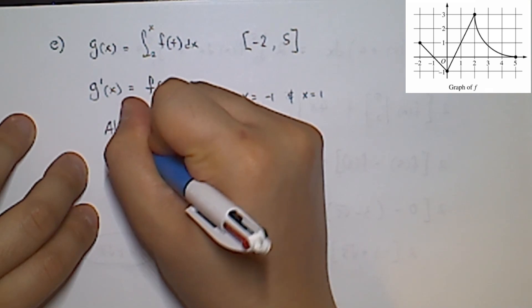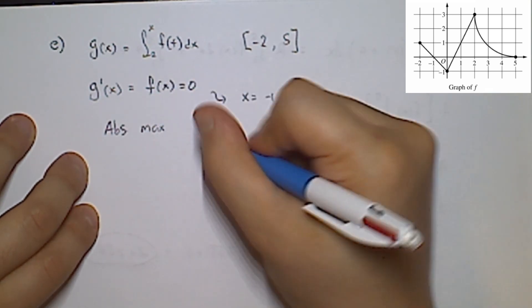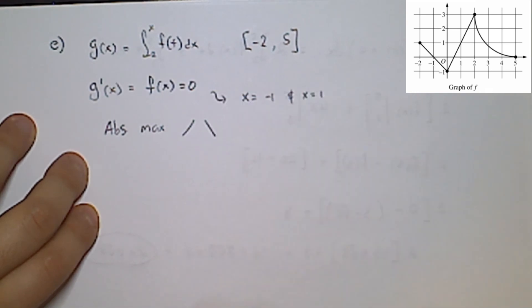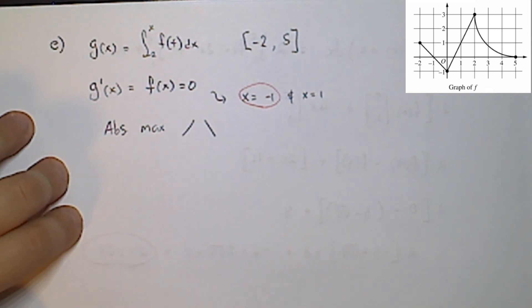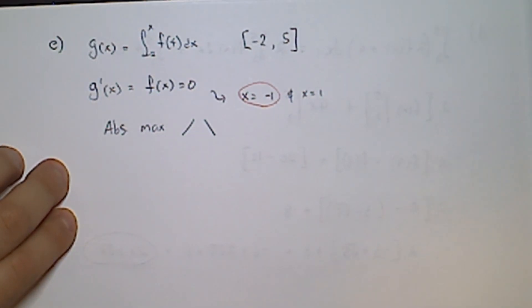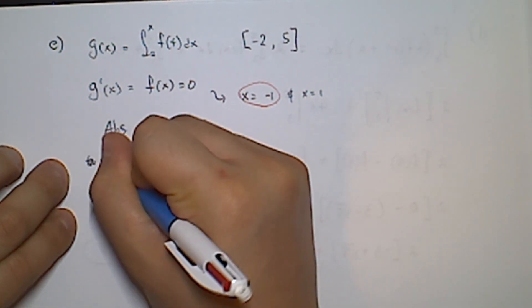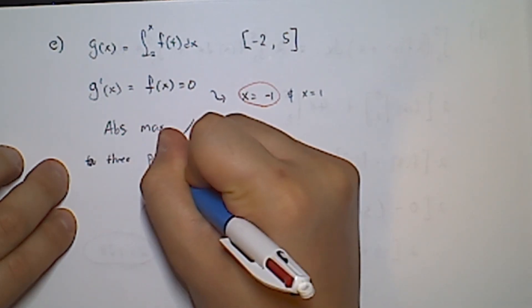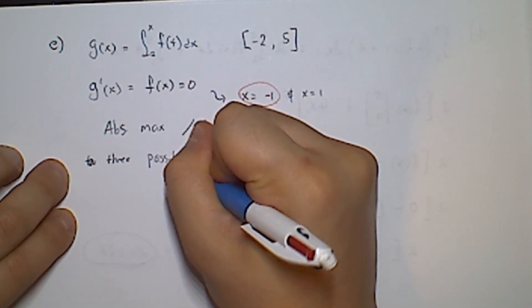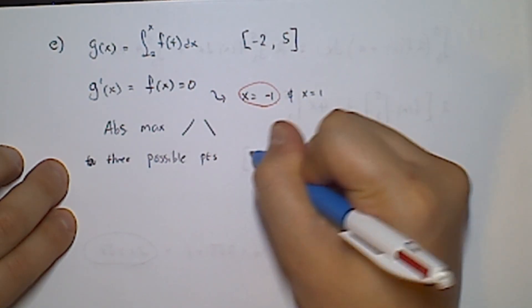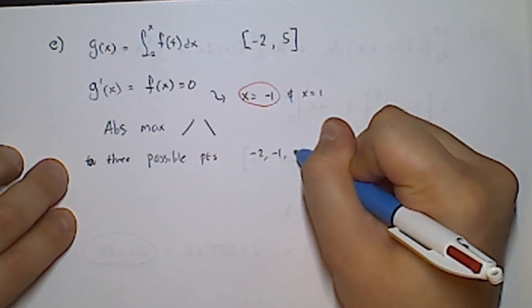We're looking for the absolute maximum, which requires f(x) to go from positive to negative. Looking at the graph, this only happens at x = negative 1. For the absolute maximum, we test three candidate points: the critical point x = negative 1 and the endpoints x = negative 2 and x = 5.